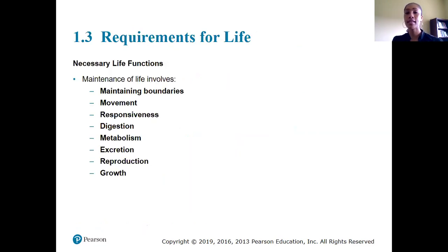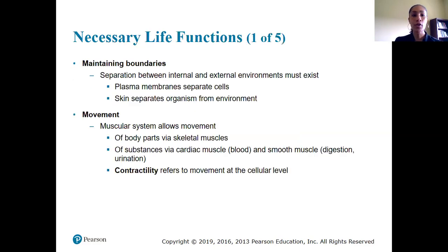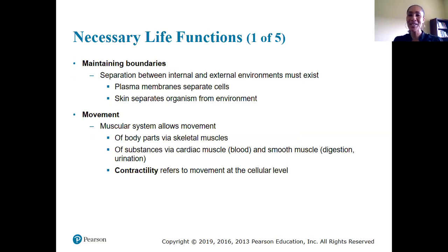In the human body we have 11 organ systems. What are the requirements for life — what components are necessary for us to even be alive? We have basic functional processes that need to occur. First, maintaining boundaries: we need some type of separation between our internal and external environments. It wouldn't be beneficial if we didn't have skin, and all our vital organs, muscles, and blood vessels were exposed to the external environment. Even at the cellular level, the plasma membrane separates cellular components from extracellular fluid.